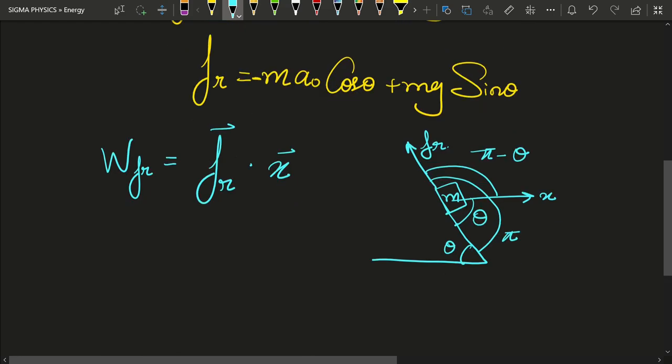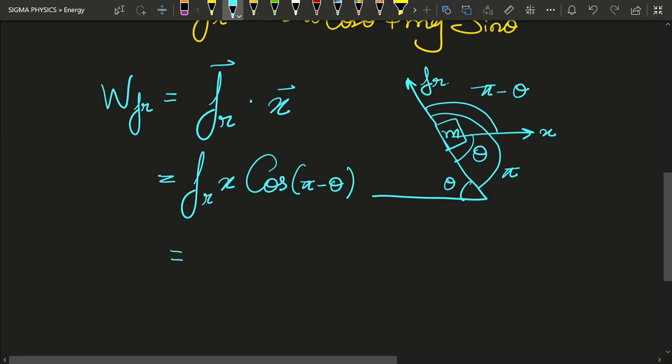And if that is the case, then what we will get here is that the work done by friction would be equal to fr x cos of pi minus theta. That is how you define the dot product between two vectors.